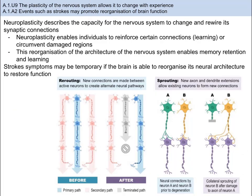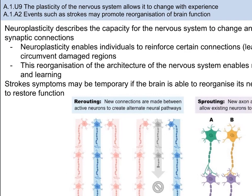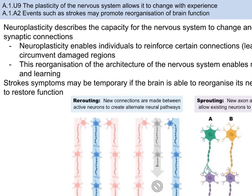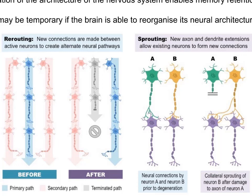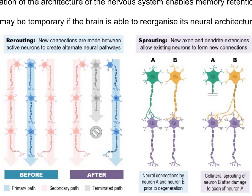Similarly, our nerve cells are constantly refining their connections, strengthening some while others atrophy or kind of go away. Different connections are made, and rewiring of nerve cells occurs. The capacity for the nervous system to change and rewire its synaptic connections is called neuroplasticity. Neuroplasticity enables individuals to reinforce certain connections — so learning — or circumvent damaged regions. Neuroplastic change can occur at small scales, for example changes to individual neurons, or at large whole-brain scale, like as a response to injury. Brain function might move to a new area of the brain. This reorganization of architecture enables memory retention and learning. Growth of axons and dendrites is as much a part of neuroplasticity as pruning and apoptosis. Regrowth of axons can be up to five millimeters per day. Neuroplasticity is seen throughout the life of an organism, but brains show a much higher degree of plasticity during early childhood. Theories explaining memory and learning depend on the phenomena of neuroplasticity.